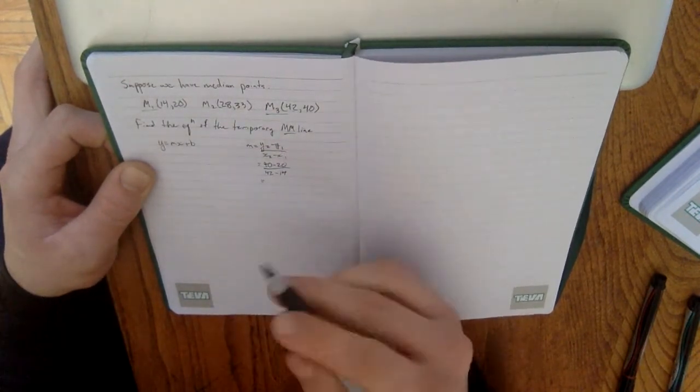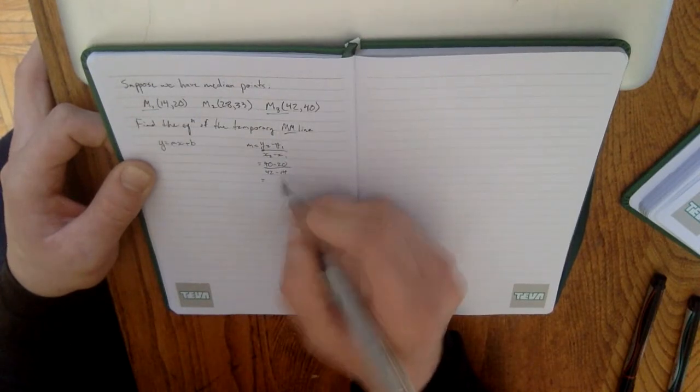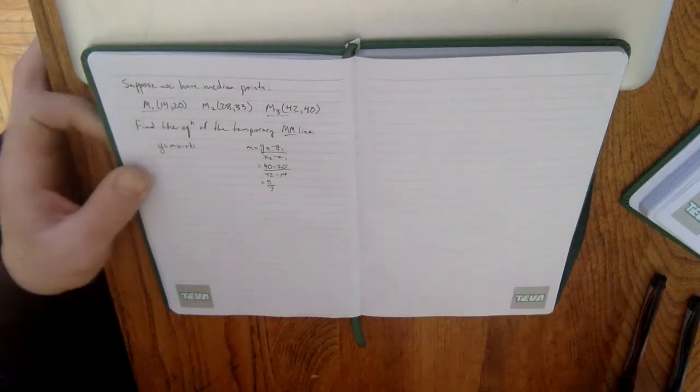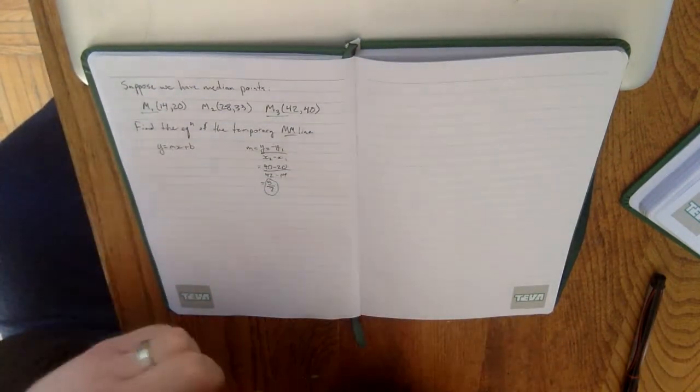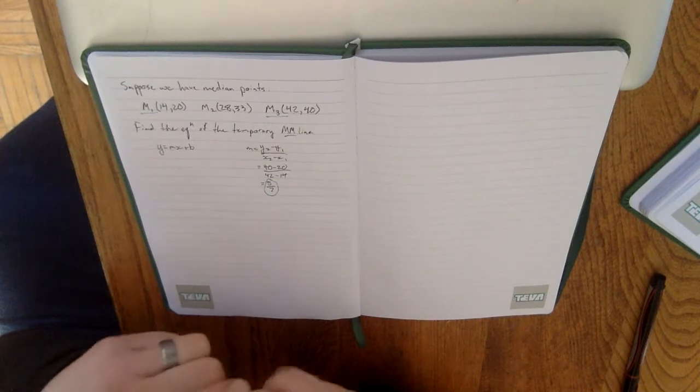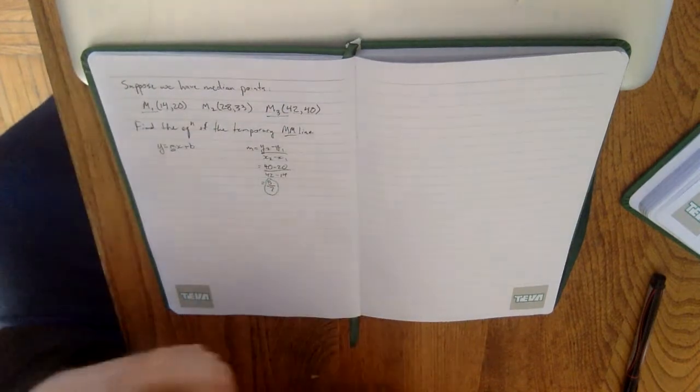Now, just to save a little bit of space on the paper, this reduces to 20 over 28 or 5 over 7. So, now I have my slope. This slope is going to be the slope of not only my temporary line, but also my median-median line. And it's the slope that I'm going to substitute into there.